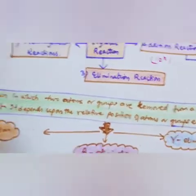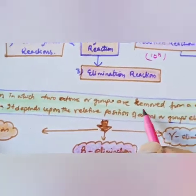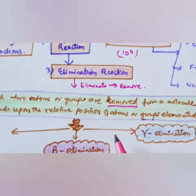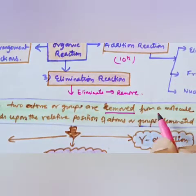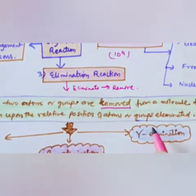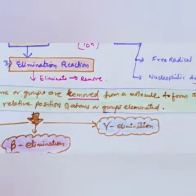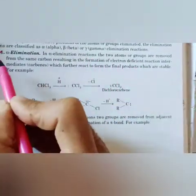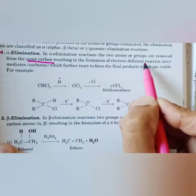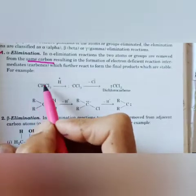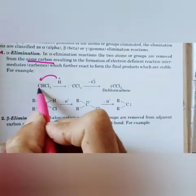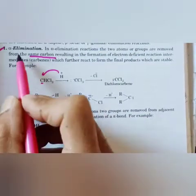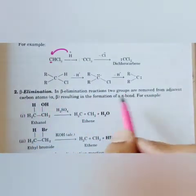The third type is elimination reaction, in which two atoms or groups are removed from a molecule to form the product. It depends on the relative position of the atoms or groups being removed: alpha elimination, beta elimination, or gamma elimination. In alpha elimination, two atoms or groups are removed from the same carbon atom, forming an electron-deficient species such as a carbocation — for example, CHCl3 losing H to form an electron-deficient carbon.